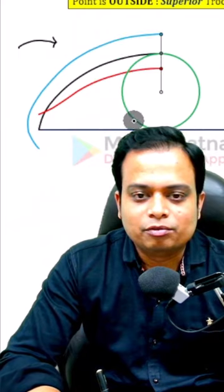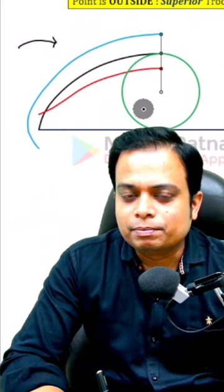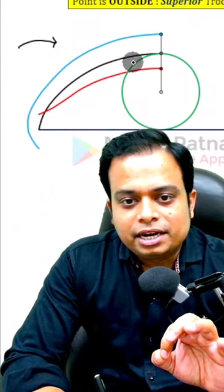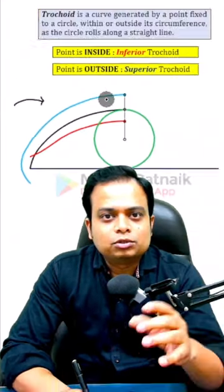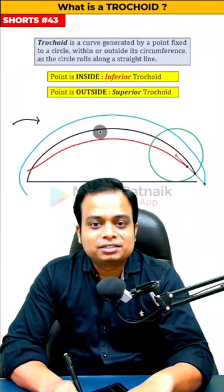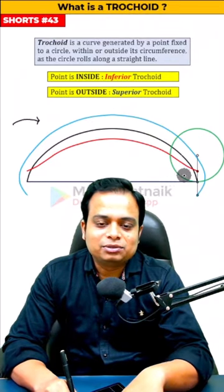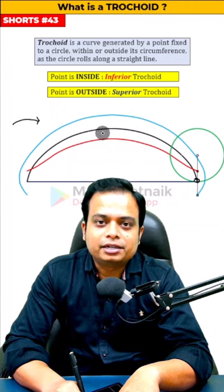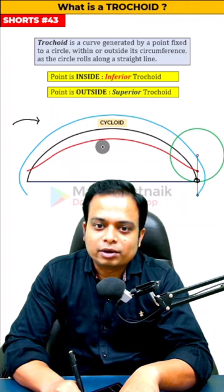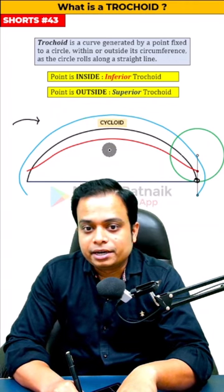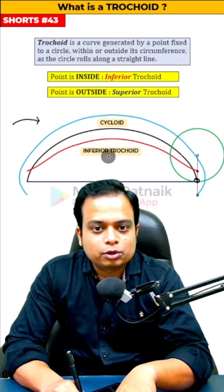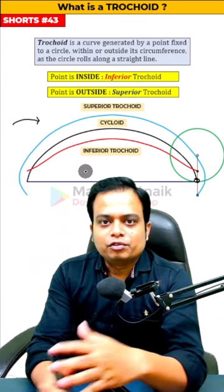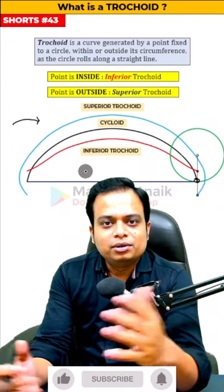Watch — as we cover half a revolution, three different types of curves are already visible, shown by different colors. The point on the circumference creates a curve known as a cycloid. The point inside creates a curve known as an inferior trochoid, while the point outside creates a superior trochoid.